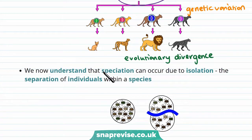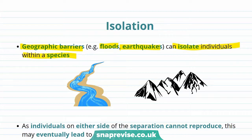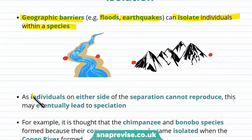Speciation can occur due to isolation, which is a separation of individuals within a species. Geographic barriers — for example, floods and earthquakes — can isolate individuals within a species. Individuals may be stranded on either side of the barrier. As the individuals on either side of the separation can't reproduce, this may eventually lead to speciation.